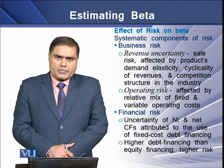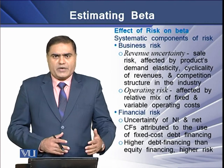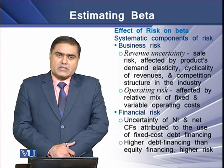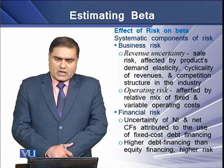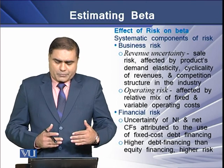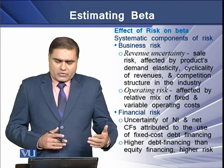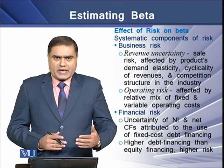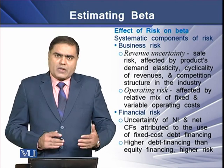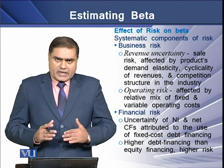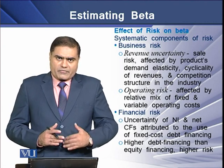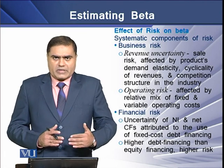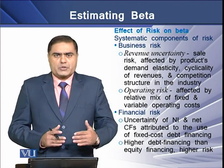Operating risk occurs due to the combination of variable and fixed operating costs incurred in business operations. The second major component is financial risk. This risk occurs due to variation in net income and net cash flows attributable to debt — in terms of interest payment and repayment of principal. If the value of debt is higher than the value of equity in any company, the financial risk of that firm is much higher.